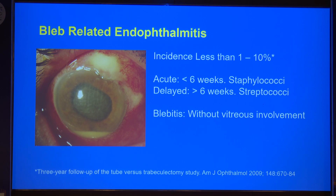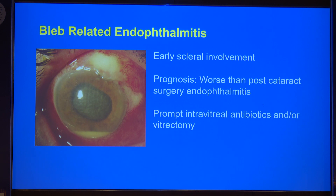From a vitreoretina perspective, whenever we see a blebitis we mostly treat it as an endophthalmitis. Sometimes even when the vitreous is clear, intravitreal injections might be given because of the high likelihood of development of endophthalmitis. Bleb-related endophthalmitis usually has very early scleral involvement, which reduces the prognosis and gives it a worse prognosis than post-cataract endophthalmitis. Prompt treatment with intravitreal antibiotics and most of the time vitrectomy is needed.